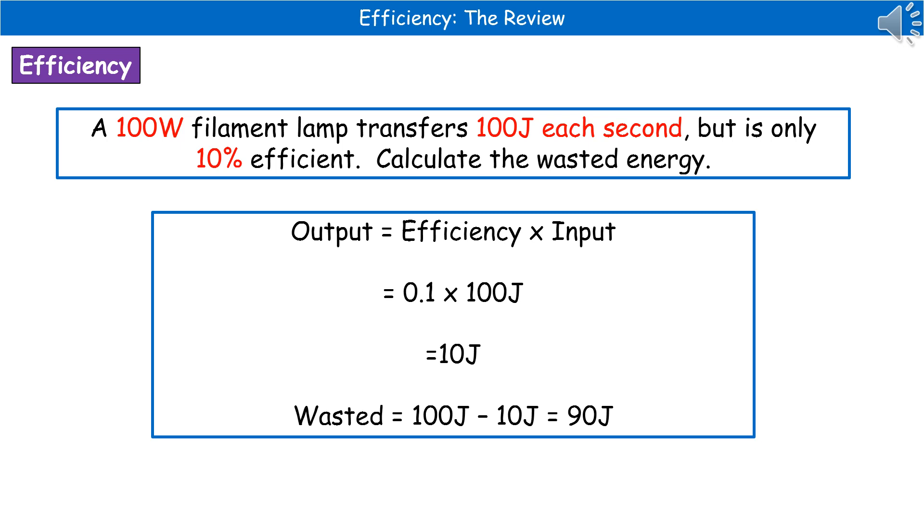To calculate the wasted energy, you take the input minus the useful. That gives us 100 minus 10, which is 90 joules of wasted energy.